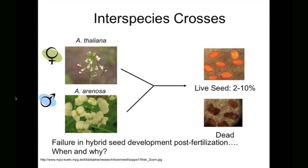In this experiment, researchers were interested in interspecies crosses between Arabidopsis thaliana, which is a well-studied model organism for plant genetics, and a closely related species Arabidopsis arenosa. It's been observed previously that when these two species are crossed, very few viable seeds result, but different ecotypes — different naturally occurring variants of Arabidopsis thaliana — have different percentages of seed survival.